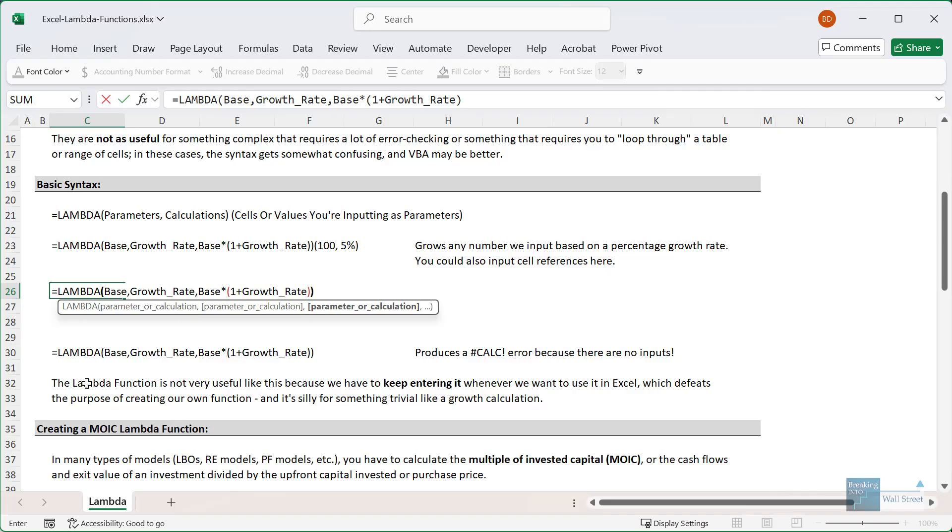And then for the parameters, we can say 100, which corresponds to the base right here. And then we can say 5%. And this part corresponds to the growth rate right here. And the way this works is that Excel knows that the last part of this is always the calculation or what you're doing with these numbers. And it always tries to match the first numbers or inputs before that to whatever you are entering as hard coded values right here. And so we get to 105 like that.